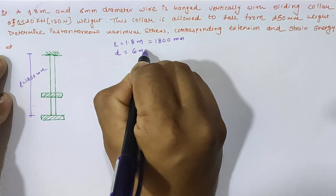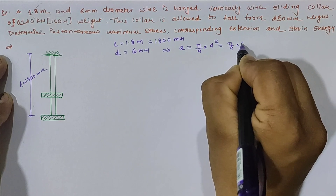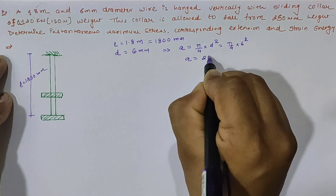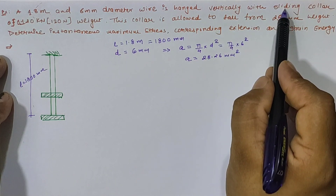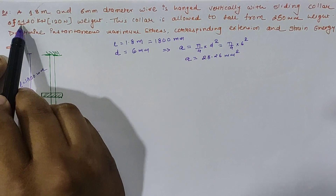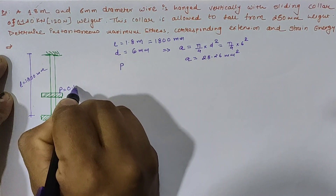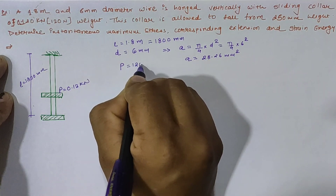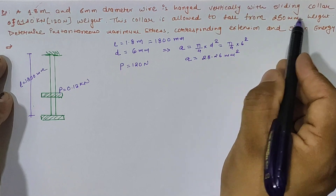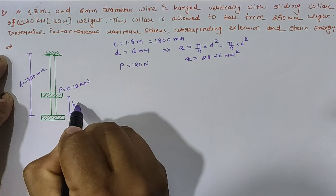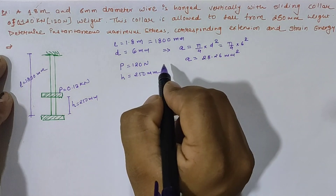The area can be calculated by π/4 × d², which equals π/4 × 6², giving us an area of 28.26 mm². Next, a vertical sliding collar of 0.12 kilonewton (120 newton) is given, and this collar is allowed to fall from a height of 250 mm.